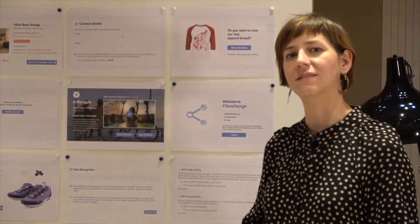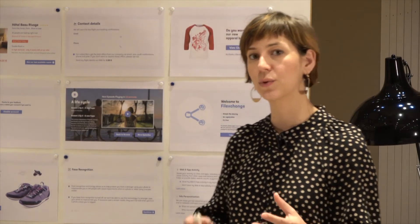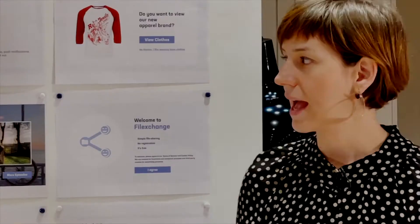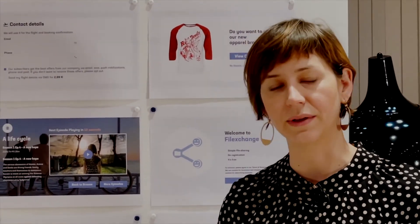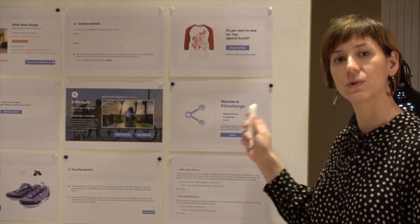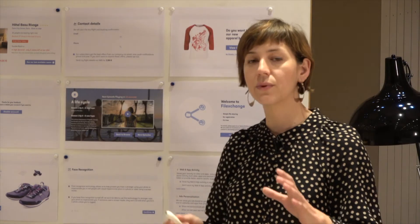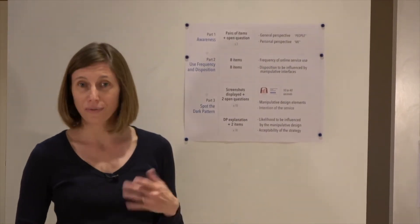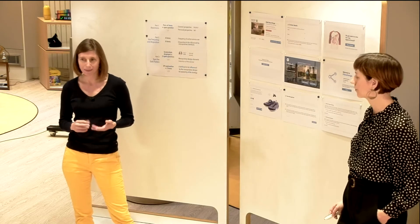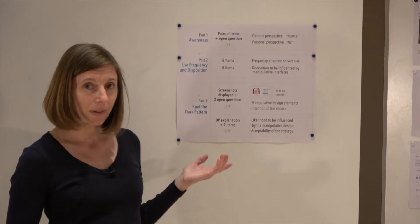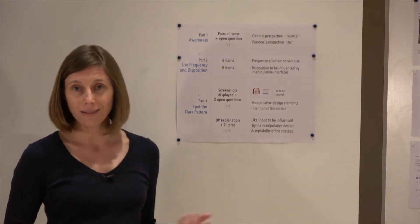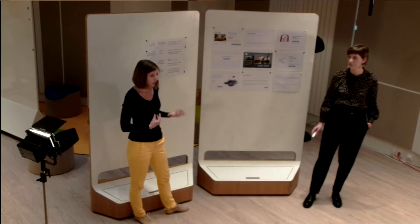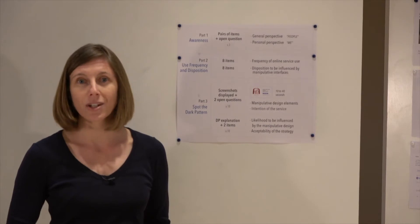And then in the third part, we designed a game that we called 'Spot the Dark Pattern.' We showed a series of interface designs to our participants, taken from real examples but freed of any reference to a brand, and we asked them whether they would find any manipulative design element inside these examples. For instance, one forces users to consent to use a service, and another uses very confusing wording to tell users how they can opt out of marketing notifications. We showed those interfaces only for a few seconds, and then people had to write down what manipulative elements they found. After going through all the examples, they got an explanation for the dark patterns. Then they had to rate again on a five-point Likert scale whether they thought the pattern was influential on their behavior, and whether they thought it was a tolerable strategy or rather not.